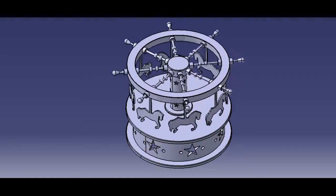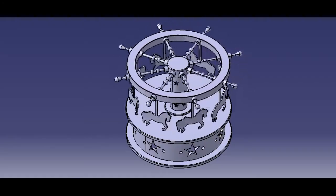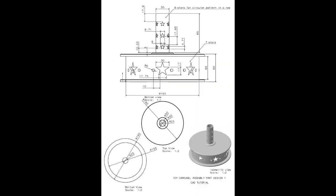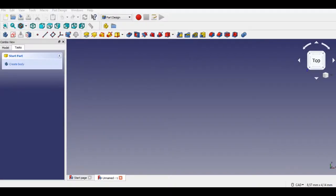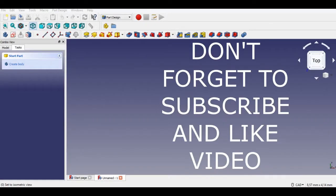Let's see the parts of the technical drawing. You can see the link to the technical drawing in the video description. Now we start drawing the support part of the carousel.